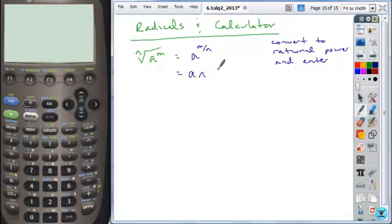And then it just becomes a caret symbol, parentheses, M slash N. So that's how you would enter that on your calculator.